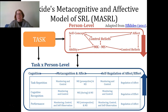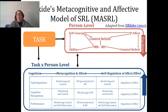Now let's talk about Elfkaid's metacognitive and affective model — we'll call this the Maslow model. It's really looking at how our affect relates to our metacognitive perspectives. We have a person level, and this top-down part considers our general abilities. The task is coming down to us, and we think about our self-concept, our ability, our control beliefs — what we believe about who is responsible for the outcome — and our affect.